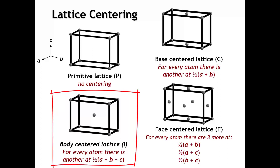The body-centered lattice is given the symbol I. When we have a crystal with a body-centered lattice, for every atom in the crystal there has to be another identical atom displaced by one-half A plus one-half B plus one-half C — that's the distance from the corner to the body center. The volume of the body-centered lattice has to be twice that of the primitive lattice, because we've doubled the number of lattice points per unit cell.